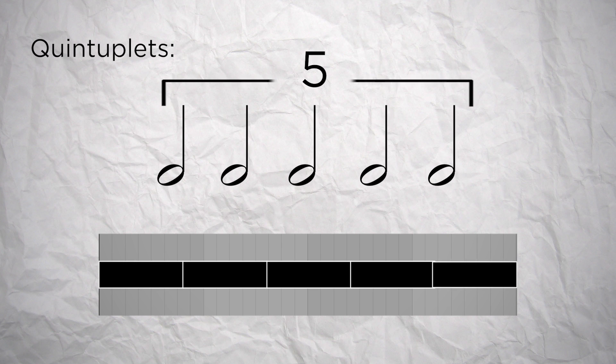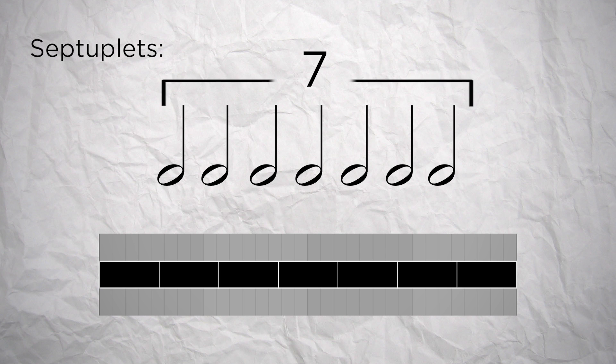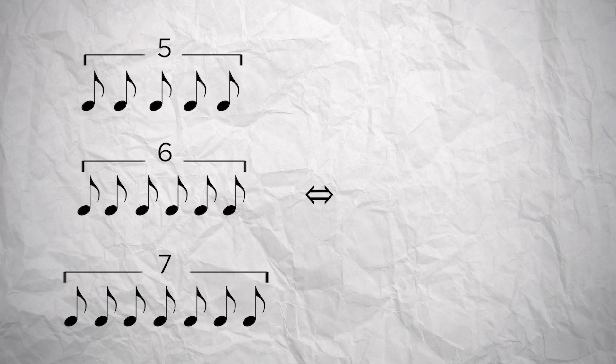Then there are quintuplets that are a way to divide the length in 5 equal parts, sextuplets divided by 6 and septuplets divided by 7. For example, quintuplets, sextuplets and septuplets on eighth notes are respectively 5, 6 and 7 notes that will take the same length than 4 eighth notes.